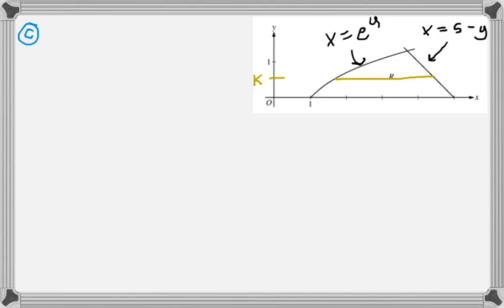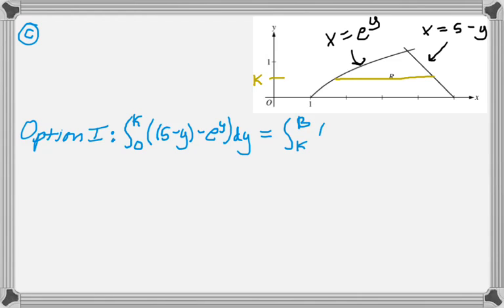Again, we know that these are our curves. The first option is to just figure out each of the areas. So the first one would be from 0 to k of right, take away, left. And then from k to B of right, take away, left. And those need to be equal to each other.